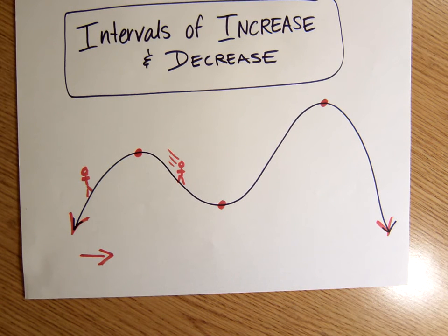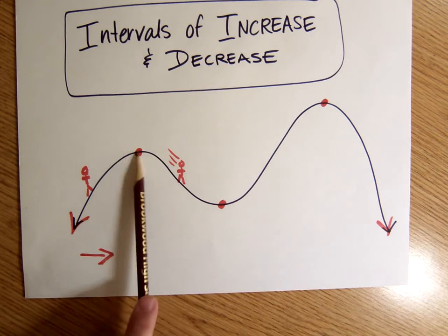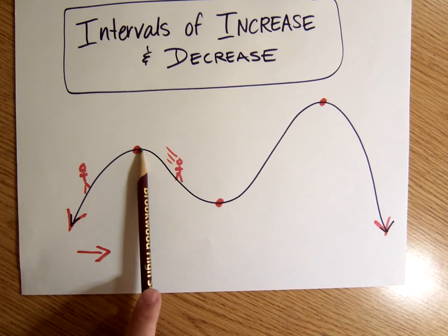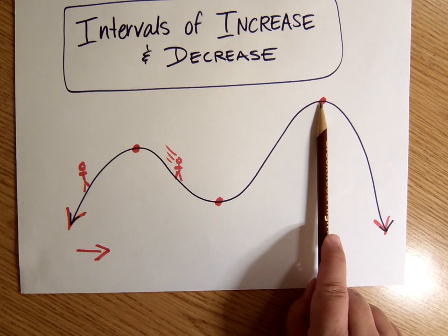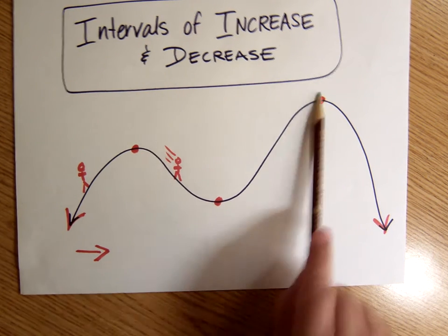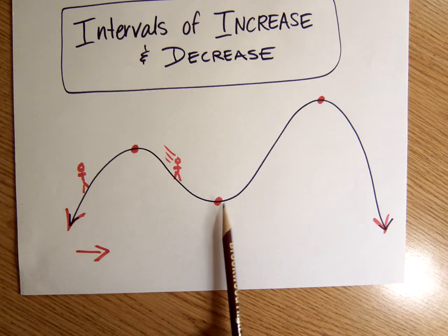Alright, part three, last part of looking at intervals of increase and decrease. We are finally going to get to how do I find these points? How do I find my turning point here, my turning point here, my turning point here, otherwise known as my relative maxima, high points, and relative minima, low points. Maxima is just plural of maximum, and minima is plural of minimum.